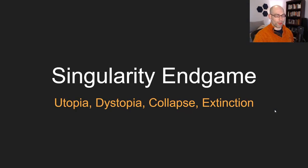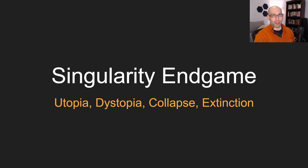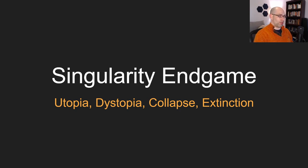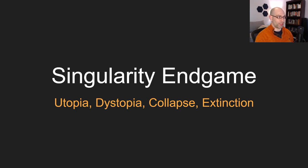Morning, everybody. David Shapiro here with another video. Today's video is going to be a bit of a doozy. We're talking about the singularity and in particular the singularity endgame — namely that there are four potential likely outcomes. There are quite a few more than these four, but these are the easiest ones to talk about. Those four are utopia, dystopia, collapse, and extinction. So let's get started.